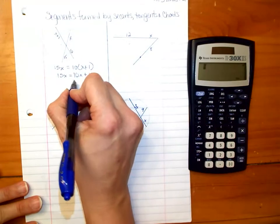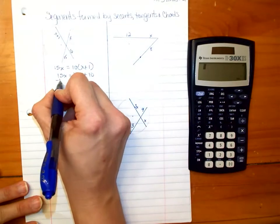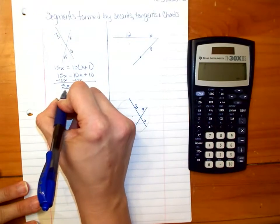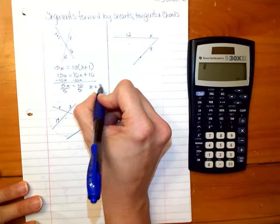It's a linear equation, so we need to get all the X's on one side. So we get 5X equals 10, we divide both sides by 5, and we get X equals 2.